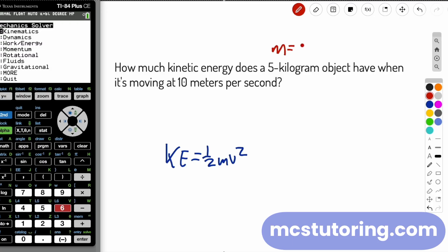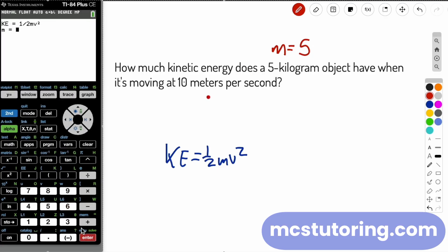Let's try an energy problem. How much kinetic energy does a 5-kilogram object have when it's moving at 10 meters per second? 250 joules. Done. No more worrying about whether you squared the velocity or forgot the one half. The calculator handles all of that.